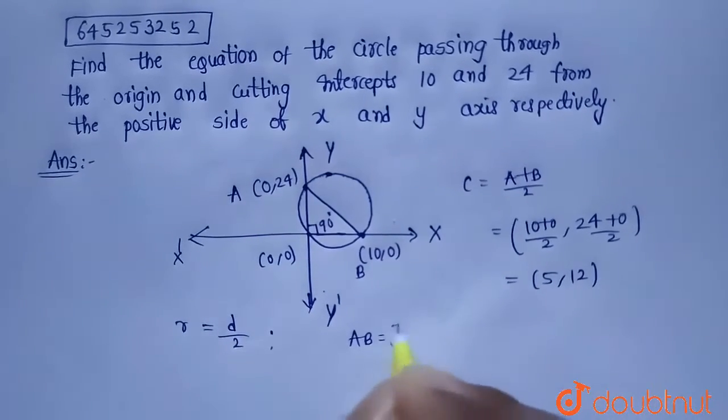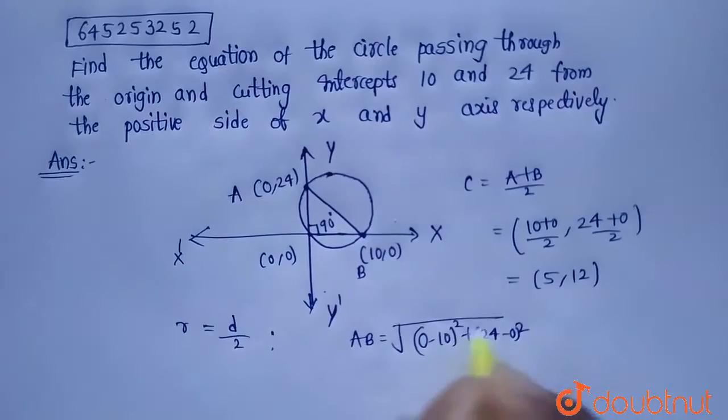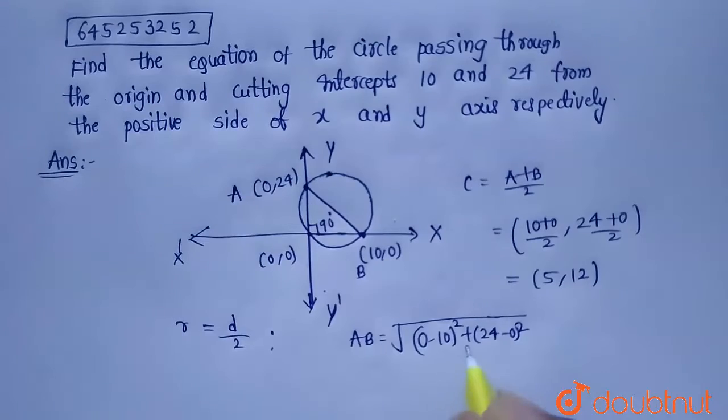So let's find out the length of AB. AB equals root over 0 minus 10 whole square plus 24 minus 0 whole square. I use the formula root over x2 minus x1 whole square and y2 minus y1 whole square to find the distance between points A and B.